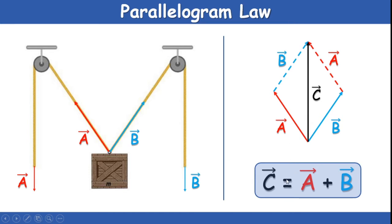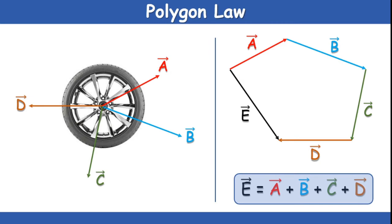That is, C bar equals A bar plus B bar. A bar is the first vector and B bar is the second vector. If we add these two vectors using the Triangle Law, we get the vector connecting from point A to point B. Using the Parallelogram Law, we can find out the addition of vectors.